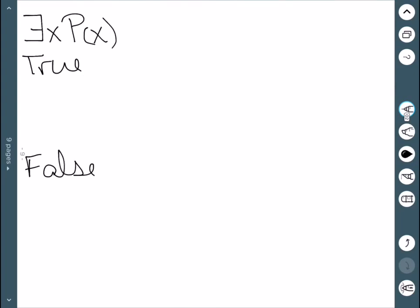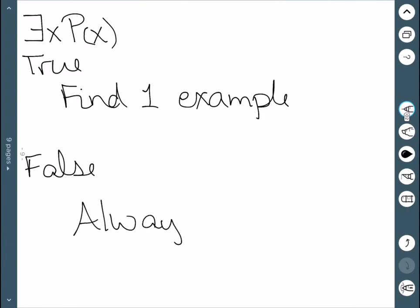For existential quantifiers, if it's true, we need to find one example where it's true. It could be true in multiple cases, but we only need to show one. To show it's false, we need to show it's always false, no matter what numbers we use.